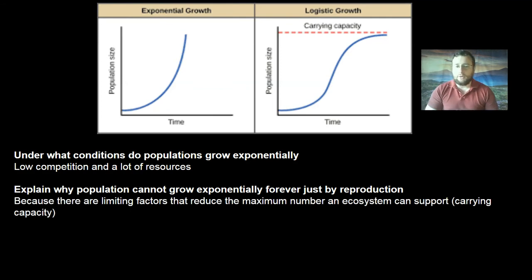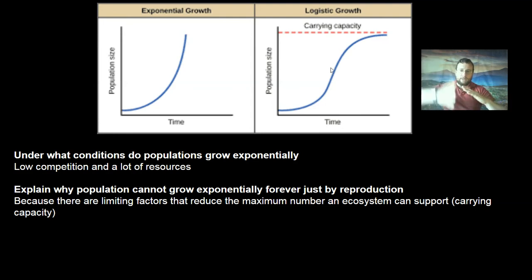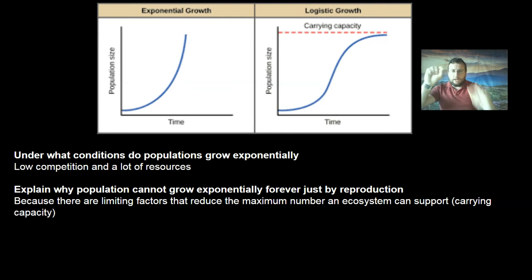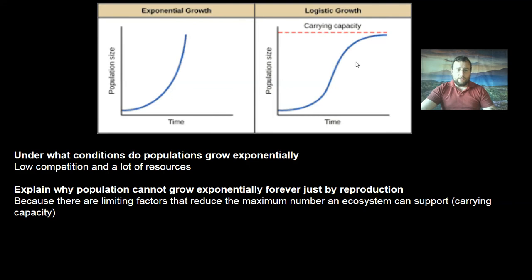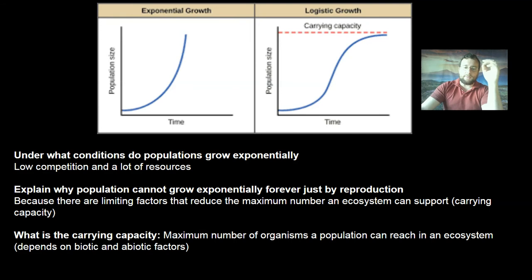Because there are limiting factors, that reduces the rate at which organisms can actually support themselves until you get to a maximal number that can be supported by an ecosystem — and that is called the carrying capacity. Any population that exceeds that number will immediately crash below it, then try to approach it again, and then crash below it, creating a zigzag that tends to flatten near the carrying capacity. The carrying capacity depends on a lot of biotic and abiotic factors, and it's basically the maximum number of organisms an ecosystem can support without the population crashing back down.